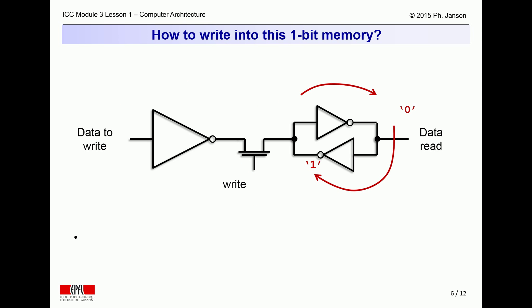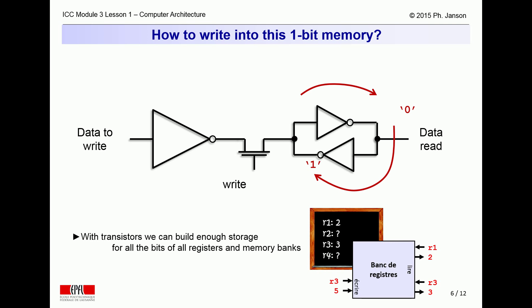At that stage the computer can remove the write signal and the input value that has now been recorded. The writing process would be identical if the computer now wanted to rewrite a 1 into the cell that for the moment remembers a 0. So, using enough such circuits, and transistors are cheap, one can thus build all the cells a computer needs for the register bank, the instruction pointer and the instruction and data memory.